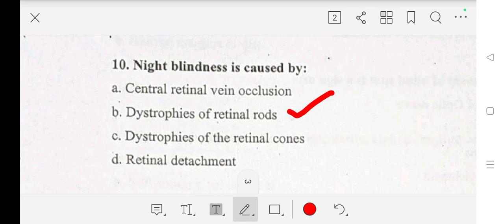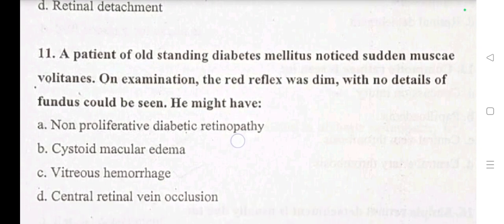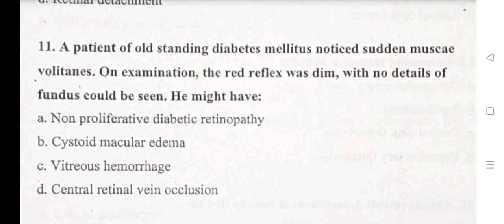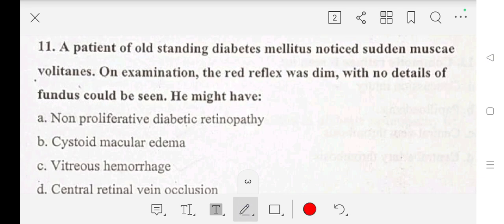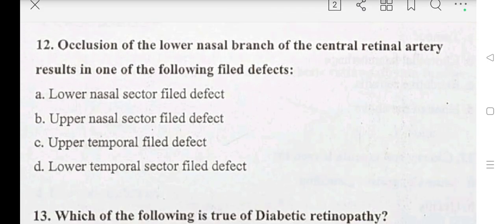Question number 11: a patient with long-standing diabetes mellitus notices sudden visual floaters. On examination the red reflex was dimmed with no detail of fundus visible. He might have — A: non-proliferative diabetic retinopathy, B: cystoid macular edema, C: vitreous hemorrhage, D: central retinal venous occlusion. Our answer is C: vitreous hemorrhage.